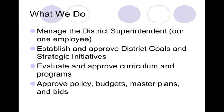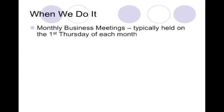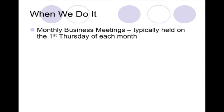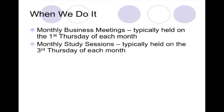When we do it: the board meets monthly for business meetings, typically held on the first Thursday of each month. The board also meets monthly in study sessions, typically held on the third Thursday of each month. These are working sessions where the board has discussions about upcoming issues and meets with administrators to brainstorm and evaluate potential ideas.